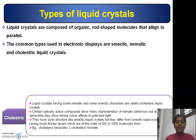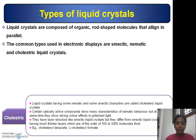The third type is cholesteric liquid crystals. Liquid crystals having both nematic and smectic characters are called cholesteric liquid crystals. Certain optically active compounds show many characteristics of nematic behavior but also show strong color effects in polarized light. They have a layer structure like smectic liquid crystals, but with much thicker layers of the order of 500 to 5000 molecules thick. Examples are cholesterol benzoate and L-cholesterol formate.